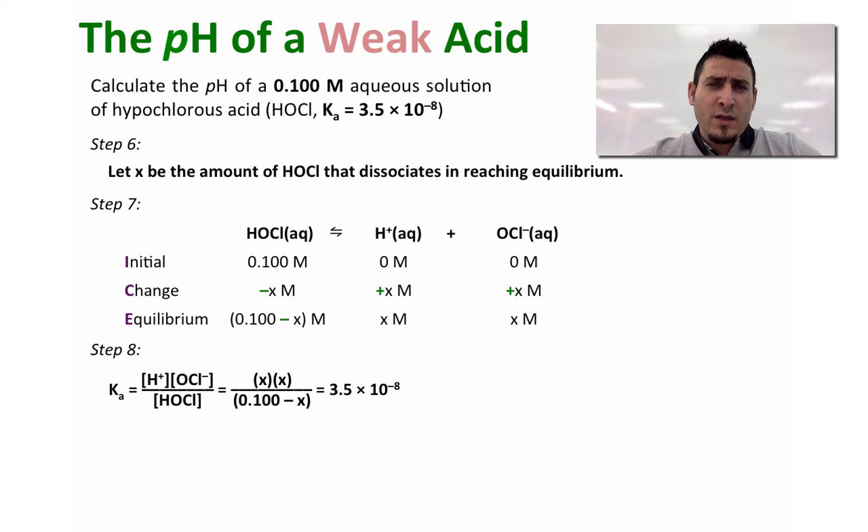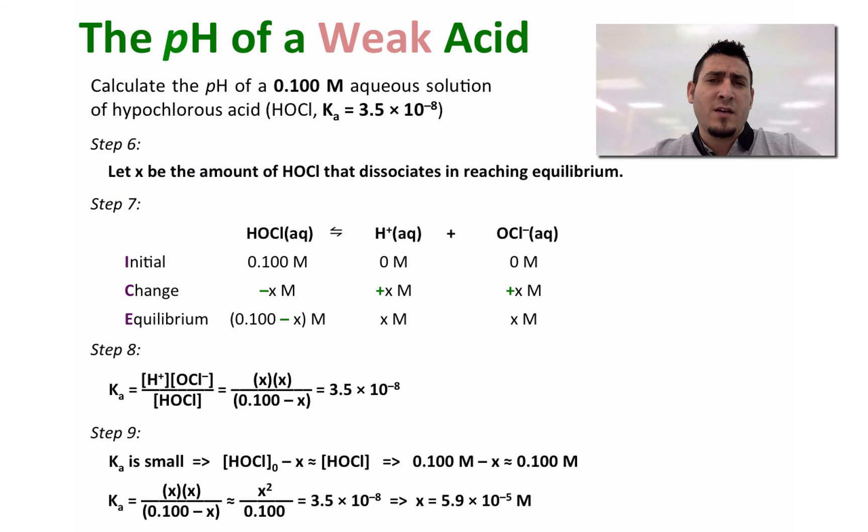Now to simplify the calculation, we have to do the following assumption. Step 9: Since Ka is small, we will consider that x is too small compared to the initial concentration of hypochlorous acid and therefore it will be neglected. If we rewrite the expression of Ka, we find that x^2 divided by 0.100 equals 3.5 × 10^-8, which gives us a value of x to be 5.9 × 10^-5 molar.